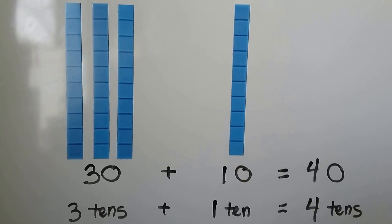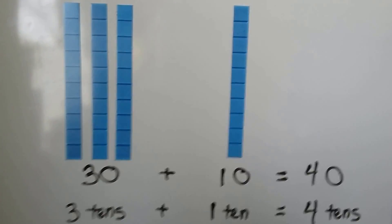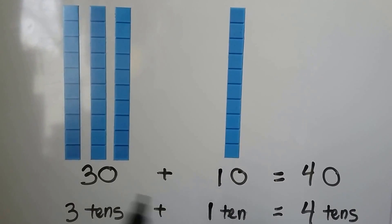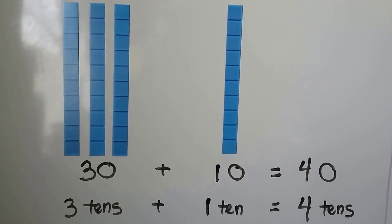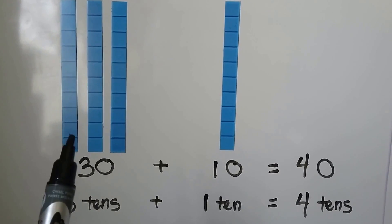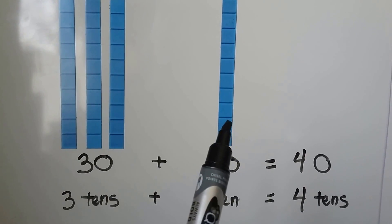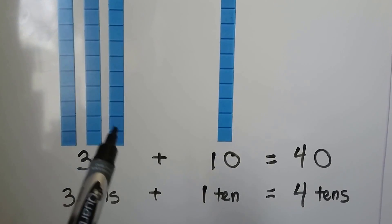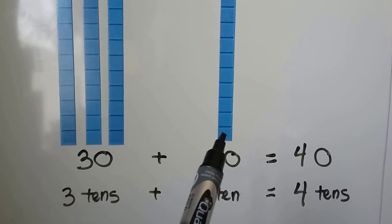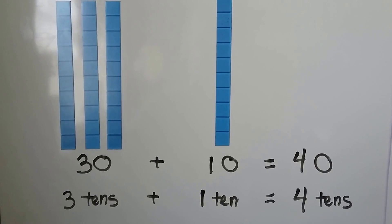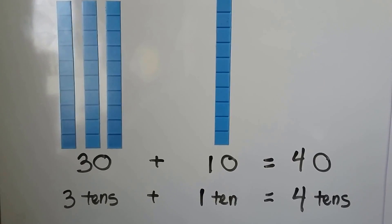Here we've got three groups of ten — that's 30 — and one group of ten, that's ten. We can add them: one, two, three, four tens. Ten, twenty, thirty, forty. Three tens plus one ten is four tens, and four tens are forty.